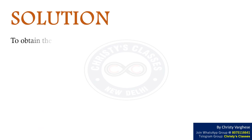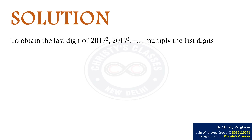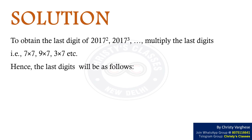Solution: To obtain the last digit of 2017 squared, 2017 cubed, and so on, multiply the last digits — i.e., 7×7, 9×7, 3×7, etc. Hence, the last digits will be as follows.